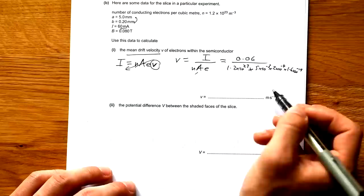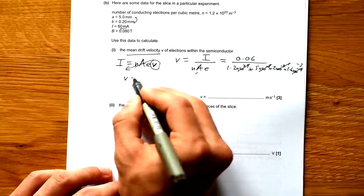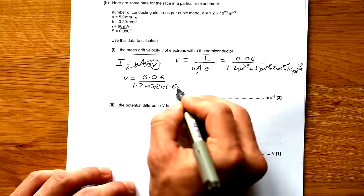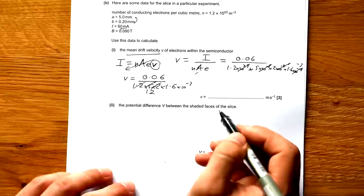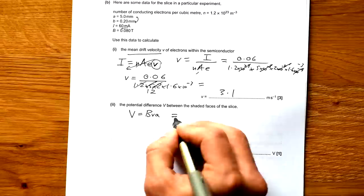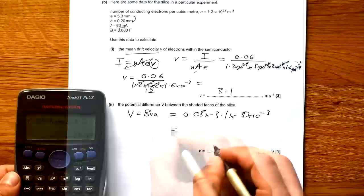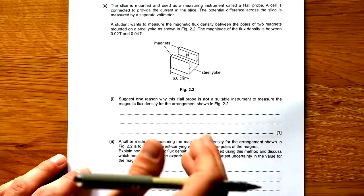Let's tidy up powers of 10, shall we? So we have 23 down to 20, down to 16. And we have minus 19, so it gives us minus 3. So let's write it out nice and neatly. 0.06 divided by 1.2 times 5 times 2 times 1.6 times 10 to the minus 3. So that's just going to be times by 10. So that's 12 times that. Let's finally put it into our calculator. And that gives us 3.1 meters per second. Calculate the PD between the shaded faces of the slice. Well, we've already been given the equation for this earlier. So BVA, so that's going to be 0.08 times 3.1 times 5 times 10 to the minus 3. And that gives us a small PD of 1.2 millivolts.